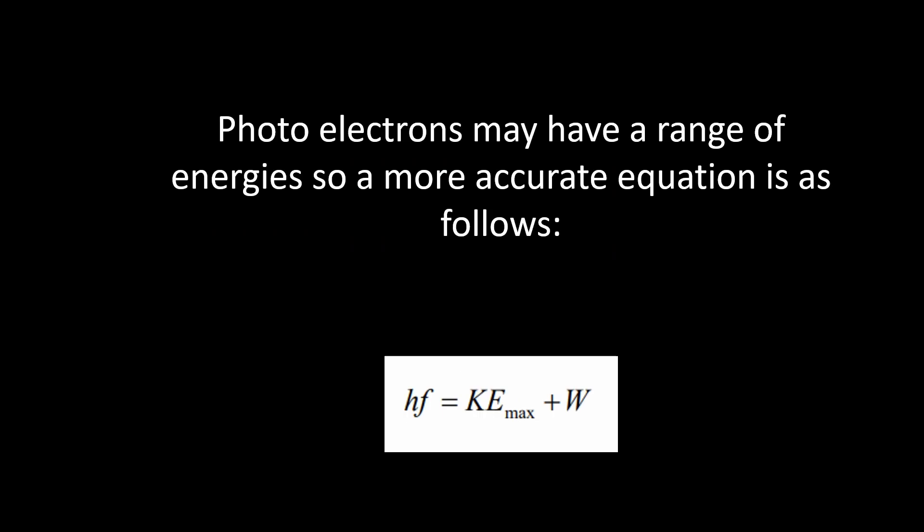In reality, ejected photoelectrons may have a range of energies. For example, electrons ejected from deeper within the metal may lose some of their energy on the way to the surface through collisions with other atoms. Therefore, we can express the relationship more accurately by the equation HF equals kinetic energy max plus the work function.